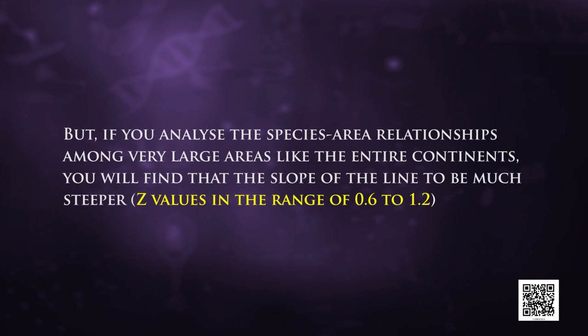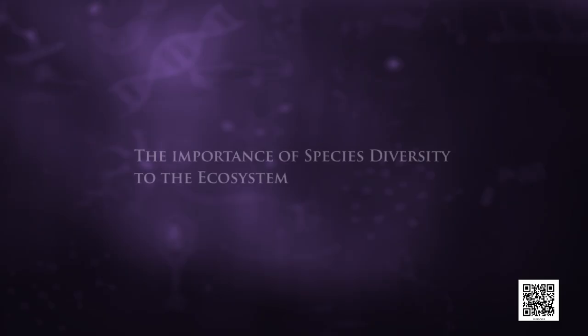However, if you analyze the species-area relationship among very large areas like entire continents, you will find the slope of the line to be much steeper, with Z values in the range of 0.6 to 1.2. For example, for fruit-eating birds and mammals in the tropical forests of different continents, the slope is found to be 1.15.